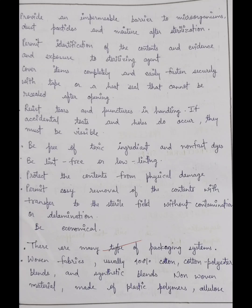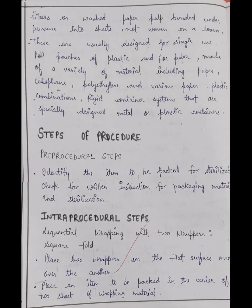Now for the procedure as used in an assignment. The packaging instrument is a procedure with three steps: pre-procedure, intra-procedure, and post-procedure steps. For the pre-procedure step: identify the item to be packed for sterilization, and check for written instructions for packaging material and sterilization — check the written order to pack for sterilization.